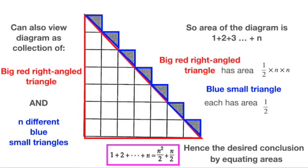If we add up the areas of these n blue triangles together with the big red triangle, we get n square over 2 plus n over 2. This must then be the same as the first way we evaluate the area of the diagram. Hence we arrive at the same conclusion.